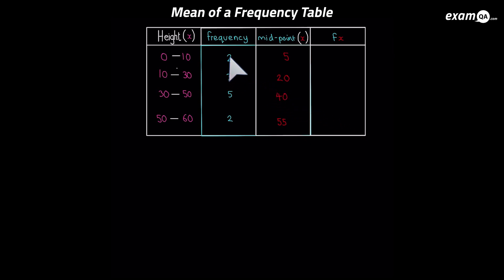So the first one is going to be 2 times 5, which gives us 10. The next one is going to be 3 times 20, which gives us 60. And then 5 times 40, which gives us 200. And finally, 2 times 55, which gives us 110.